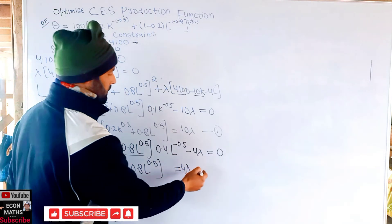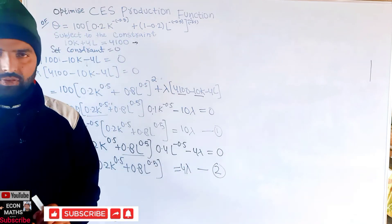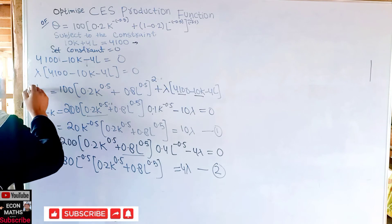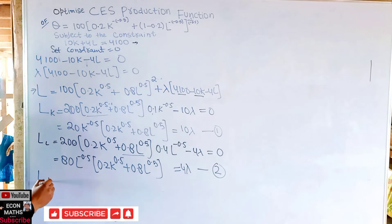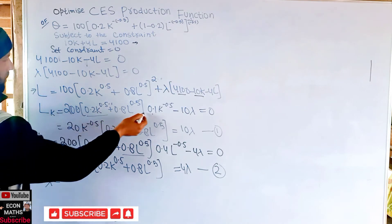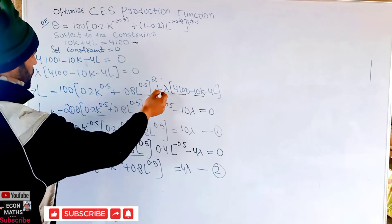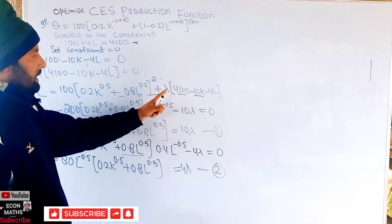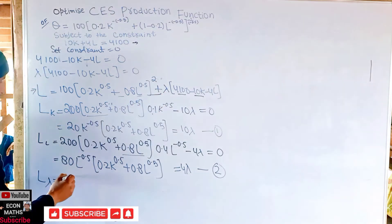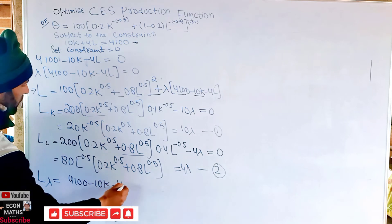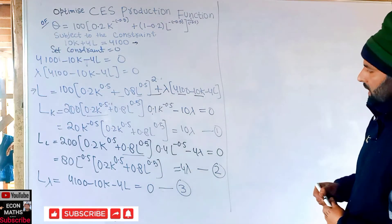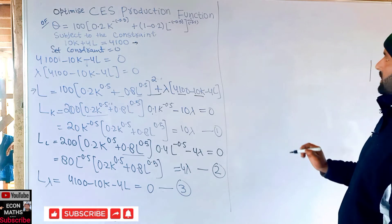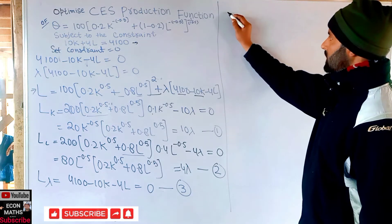Partially differentiating the Lagrangian with respect to λ: the derivative of λ is 1, so we simply recover the constraint: 4100 − 10K − 4L = 0. Let this be Equation 3.